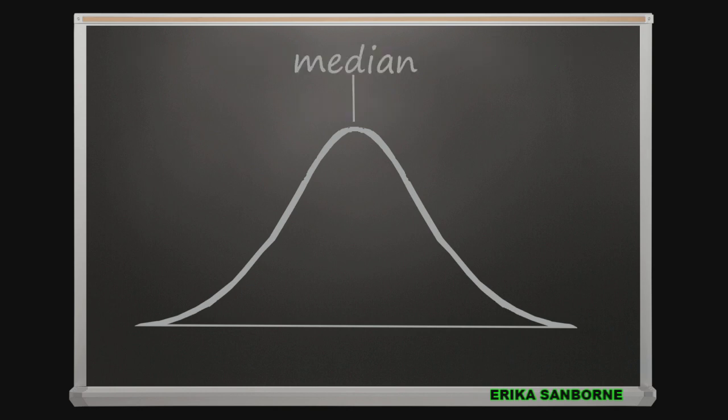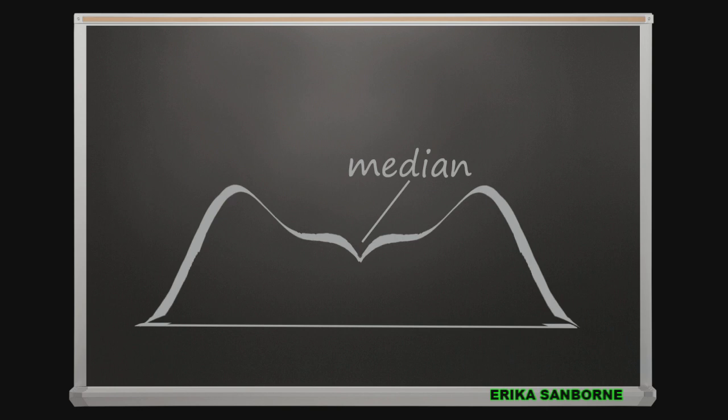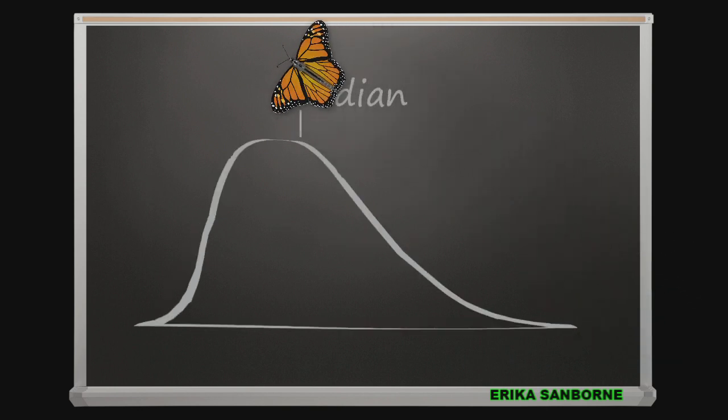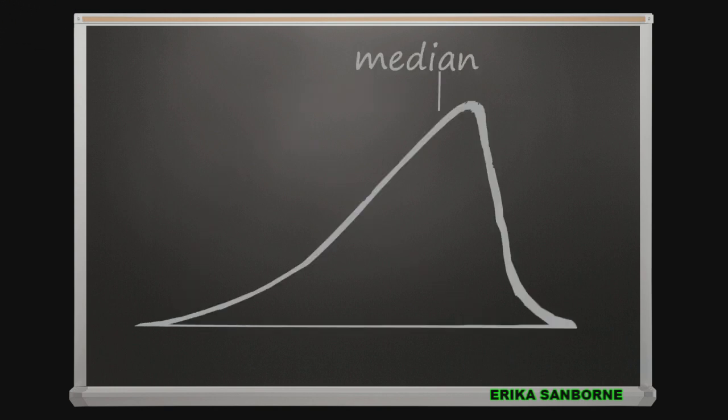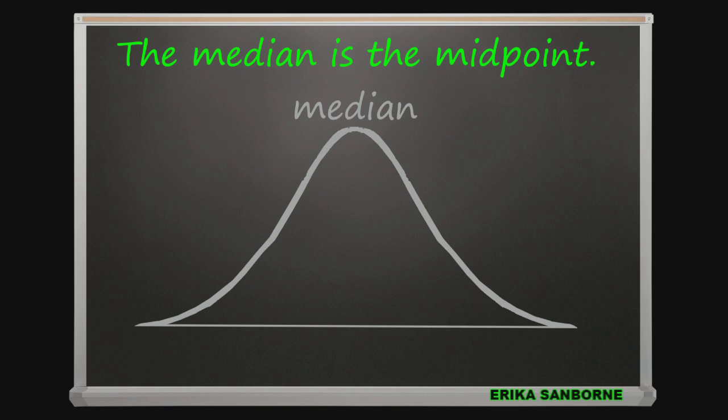So that we can put scores in order from low to high, they do have to be on a variable that gives us that information. Nominal data don't tell us what order they go in, so there's no median for nominal data. We can find the median for any variable that we can sort in order from low to high somehow, ordinal equal interval ratio scale.